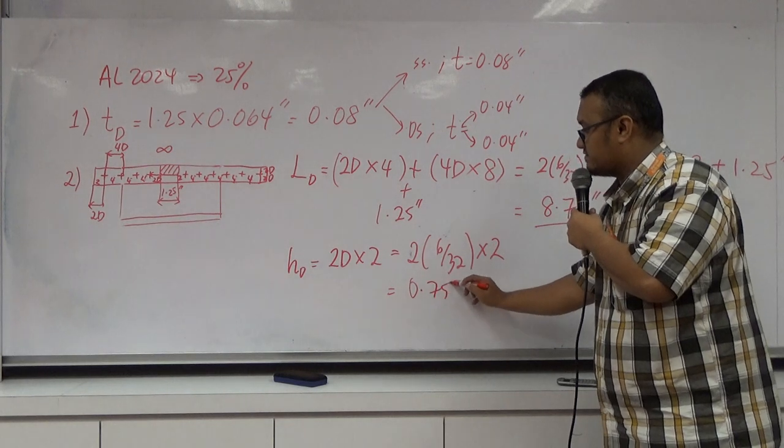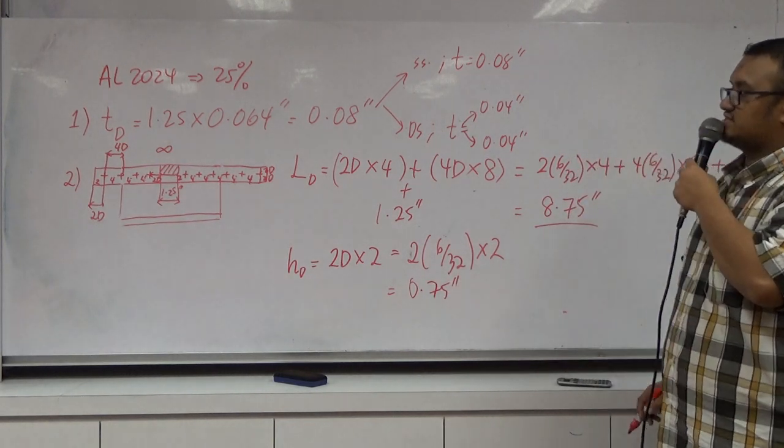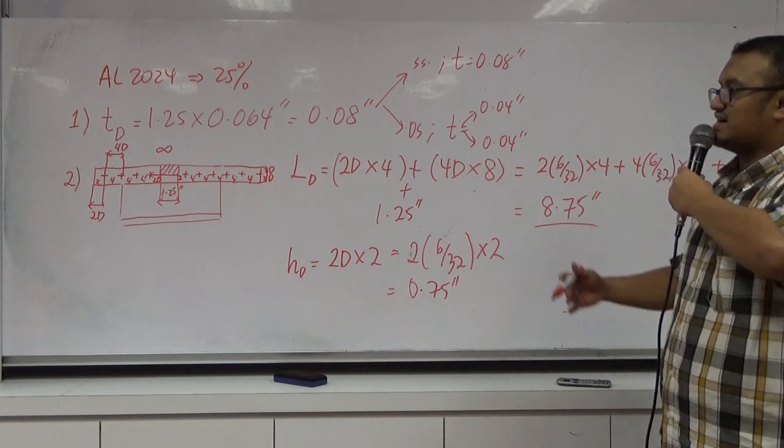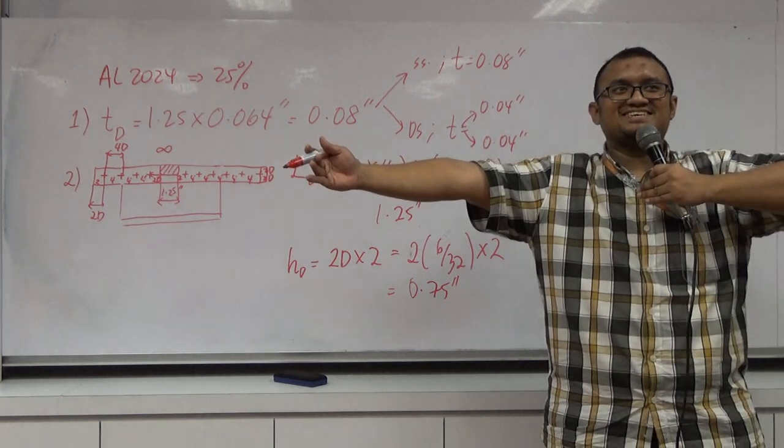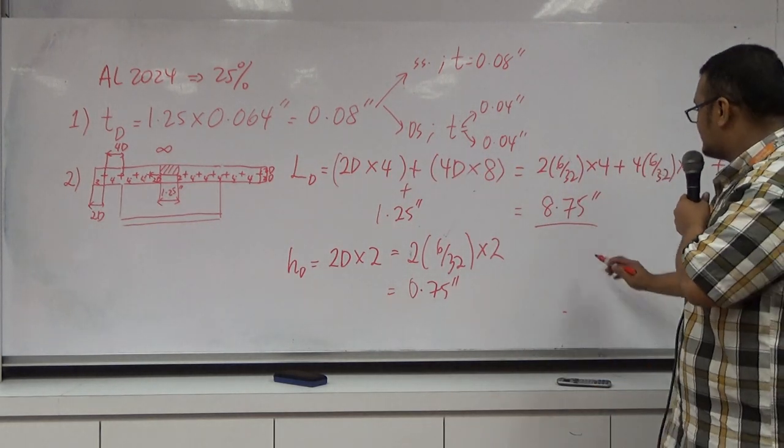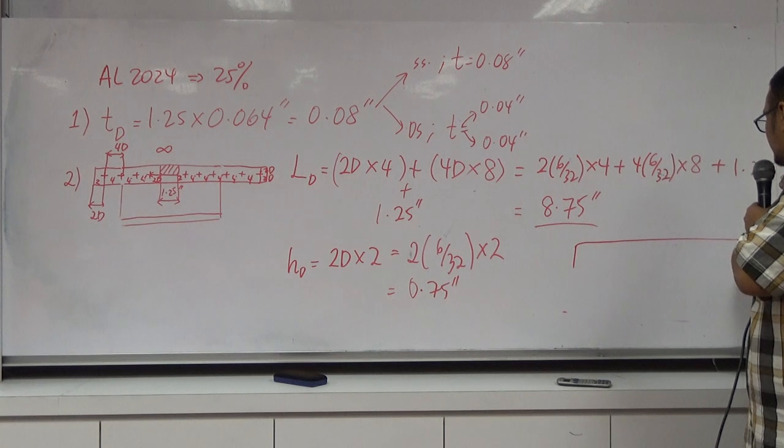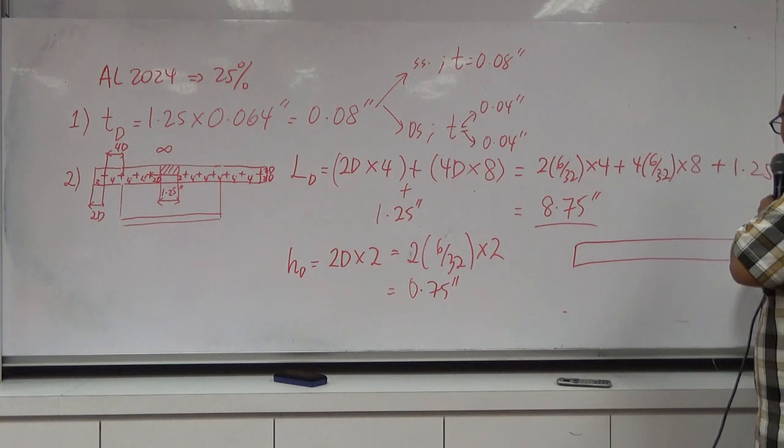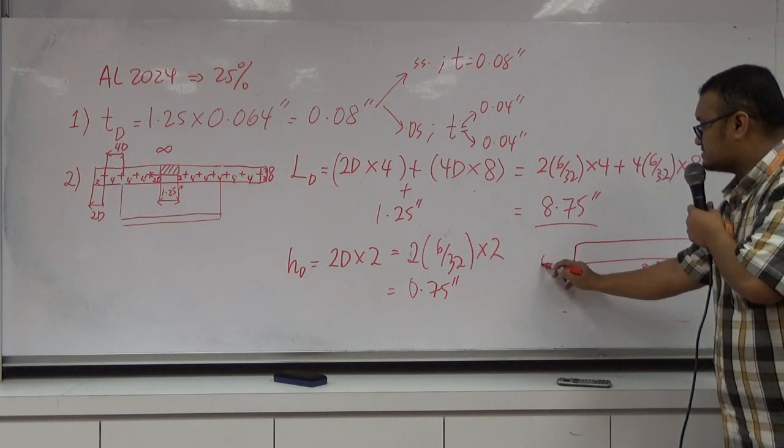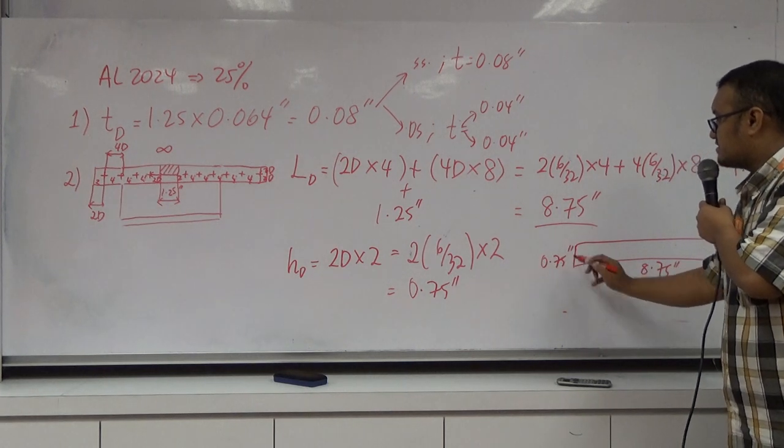0.75 inches. So that's how long our doubler will be. This is the dimension for our doubler: 8.75 inches times 0.75 inches.